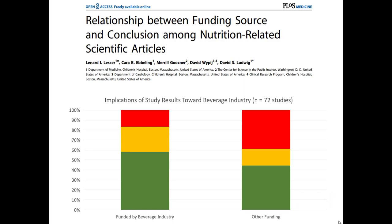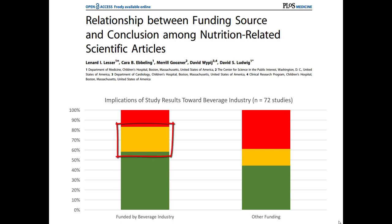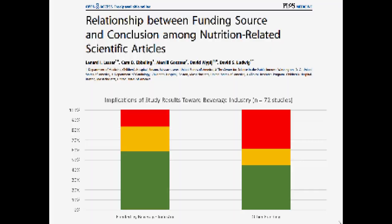Now, if the funding source had absolutely no impact on the findings of a study, we would expect to see that these two stacked bar charts would be exactly the same. However, if you look on the left, you'll notice that if the beverage industry funded an article, a greater proportion of them were scored as favorable. Indeed, a larger proportion were also scored as neutral. This doesn't inherently mean that an academic study funded by the beverage industry is automatically biased. However, this does illustrate that source effects may impact the results of a particular secondary data study.